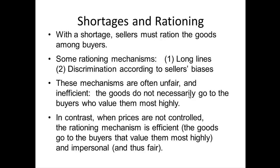Here are some examples of mechanisms that suppliers use for rationing. One of the first and more popular ones is long lines. Each time Apple comes out with a new phone, they do a mass media marketing campaign and you'll see people stand outside of an Apple store, sometimes days before the iPhone or Apple product is available. You have to look at your opportunity cost — are you willing to give up time standing in a long line to get that iPhone or iPad? So long lines is a rationing mechanism.